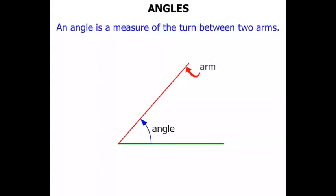This is an arm and this is an arm. So two arms there create the angle. This is known as the corner, sometimes referred to as the vertex. So you need to know both terms, corner and vertex.